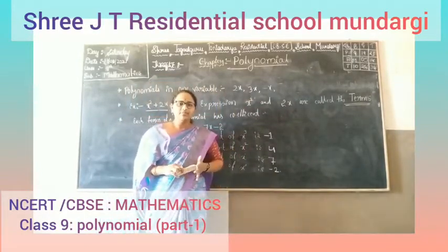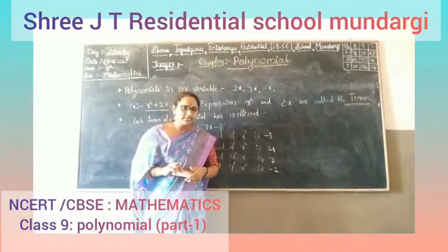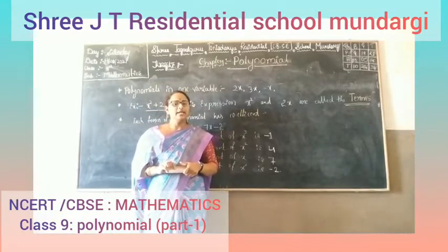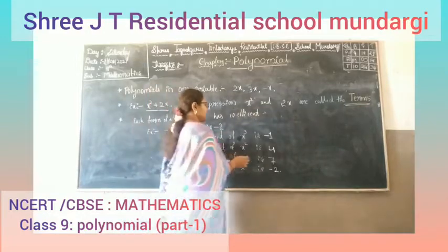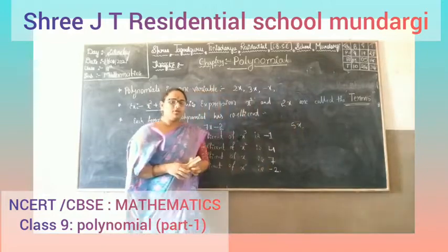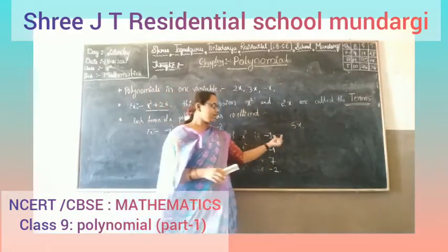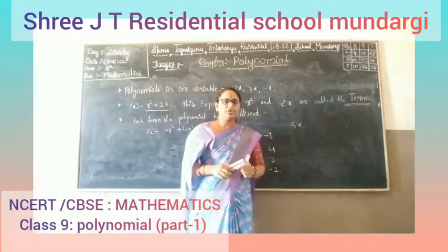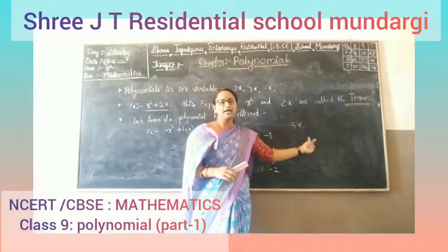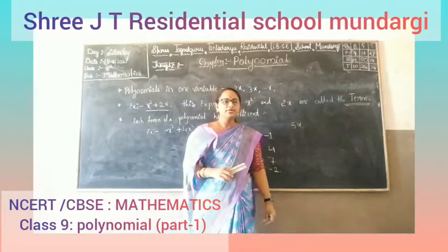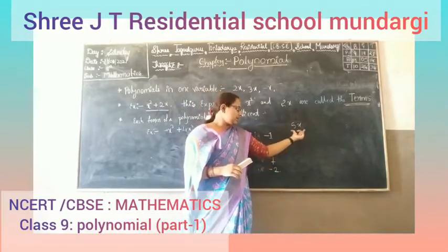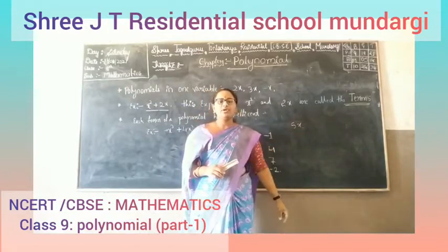So what is a polynomial? For example, take 5x. It is one term of a polynomial. Polynomials are expressions having numbers and algebraic terms. These types of expressions are called polynomials.